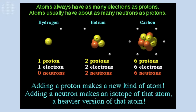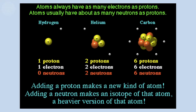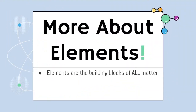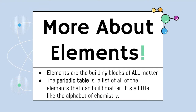Elements are the building blocks of all matter, so the periodic table is a list of all the elements that can build that matter. It's a little like the alphabet of chemistry. I go to the periodic table and it's my A, B, C, D, E, F, G — I put those letters together to form words to perform chemistry as I create those new substances.